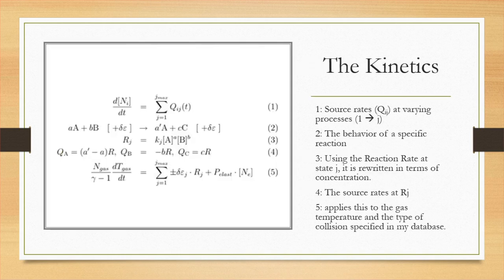So let's take a look at the kinetics. This is the Maxwell Boltzmann equation, used to run the reactions we want to test across different processes. Step one shows the source rates determining varying processes using the variable J. Step two describes the behavior of specific reactions, and step three uses the reaction rate for state J, titled Rj, in terms of concentration. Step four shows the source rates at Rj, and finally step five brings everything together with the collision type from the database and conditions such as gas temperature.